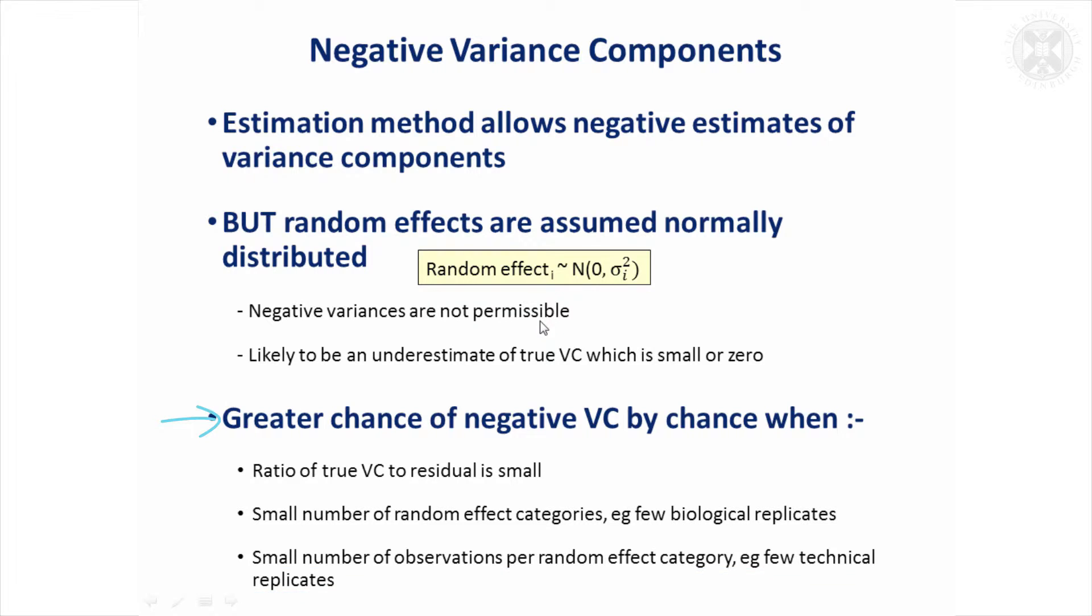So in the example I showed earlier, there would probably be a reasonable chance of getting a negative variance component just by chance if the true underlying amount of variability was small.